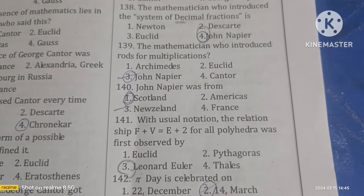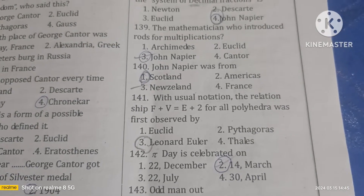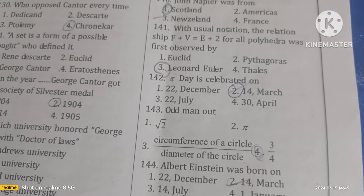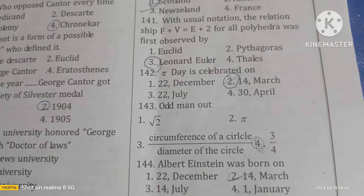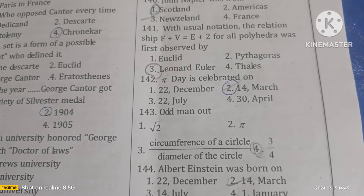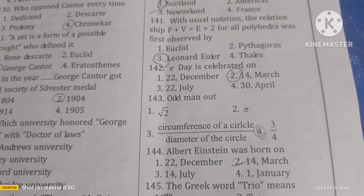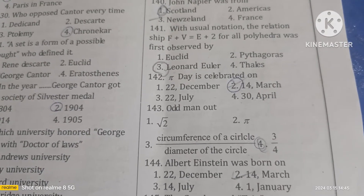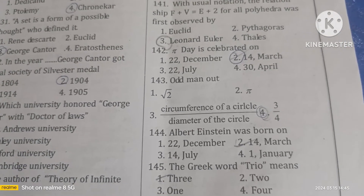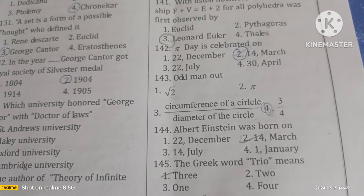The relationship F + V = E + 2 for all polyhedra was first observed by Leonhard Euler. Pi Day is celebrated on March 14th. The circumference of a circle divided by its diameter equals 2πr / 2r = π. The number 3/4 is irrational. Albert Einstein was born on March 14th.